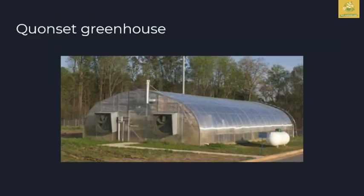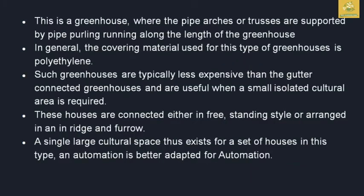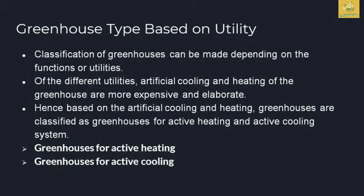The quonset type greenhouse is a very easy greenhouse to construct. You can use pipe purchases and pipeline purlins. The length of the greenhouse is suitable, and the covering material is polyethylene plastic material. It is relatively inexpensive and provides a small isolated cultural area with a direct connection. The ridge-and-furrow type provides a large cultural space. Automation is easy and cost is very small. Now we have covered the style and shape of the greenhouse.